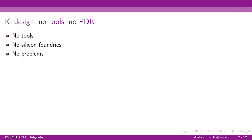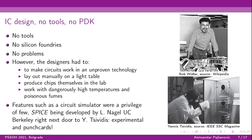Silicon foundries came a bit later — not at the beginning of IC design. Back in the 60s and 70s, when the whole storyline of integrated circuit design started, designers and some of the legends — pioneers like Bob Weidler and Yanis Tavidis, shown on the right-hand side — would have to make circuits work in an unproven technology. They had to lay the circuits manually on a light table and produce chips themselves in the lab, working with dangerously high temperatures and poisonous fumes.